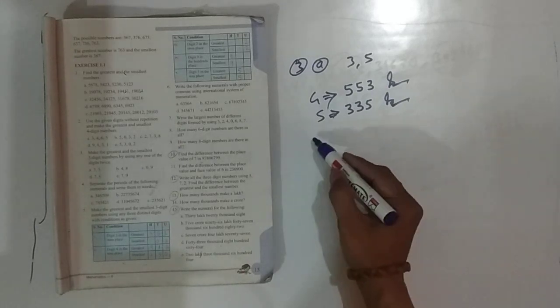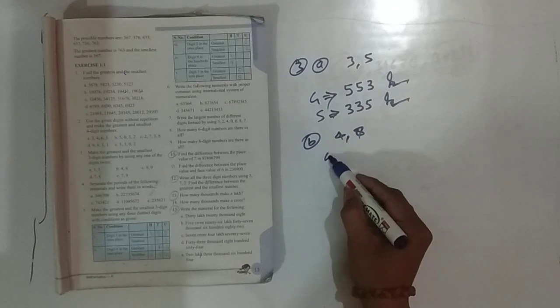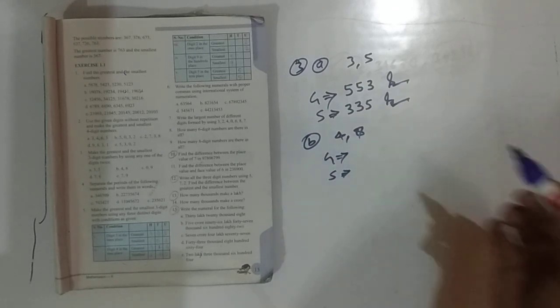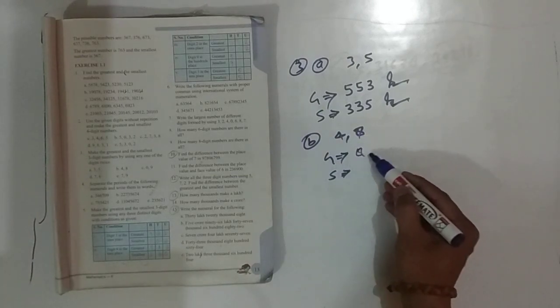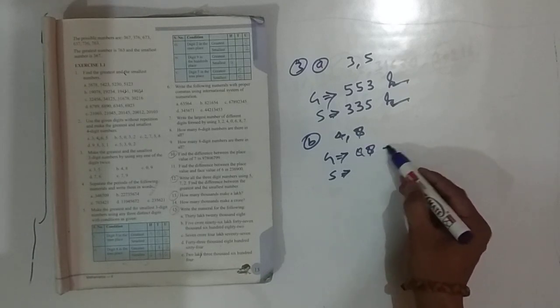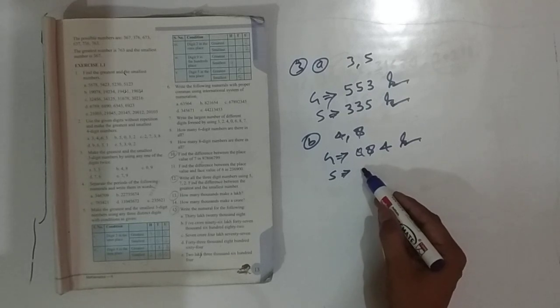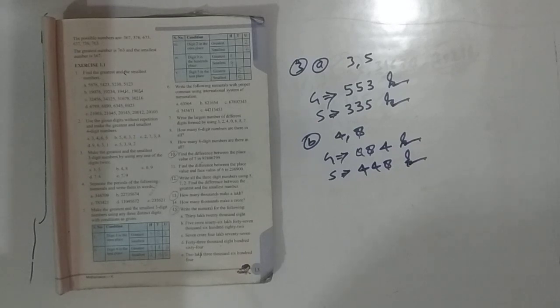The next question: the greatest number is 8. So the greatest number you could make with 4 and 8 for a 3-digit number, you write 8, 8, 4. That is the answer.